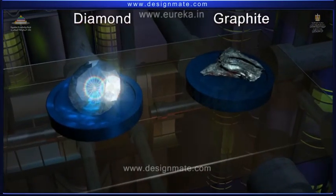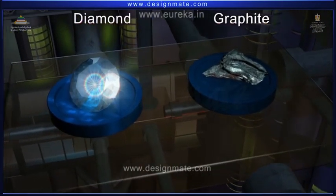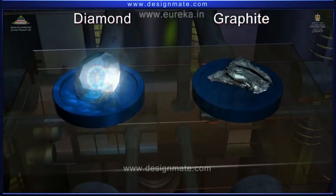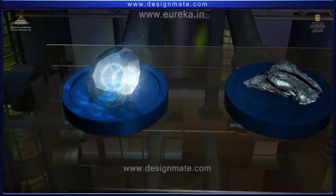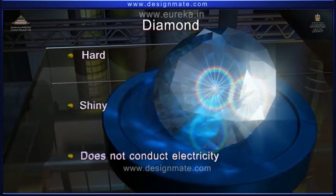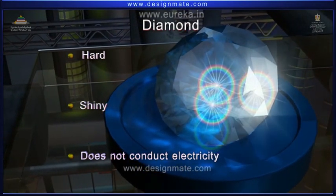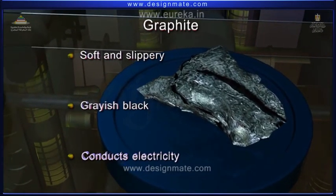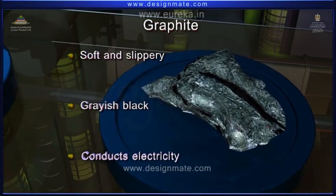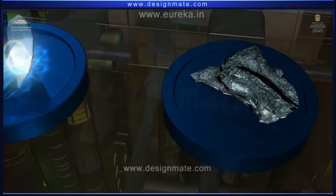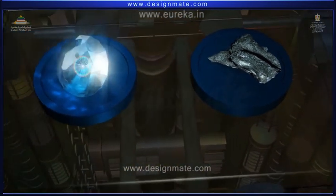Diamond and graphite are the two naturally occurring allotropes of carbon. These allotropes differ in many properties. For example, diamond is a hard and shiny substance which does not conduct electricity. On the other hand, graphite is a soft and slippery black-colored substance which conducts electricity. The difference in properties arises due to different structures of these allotropes.